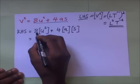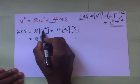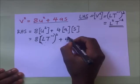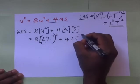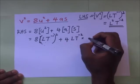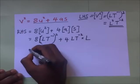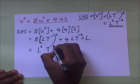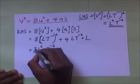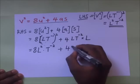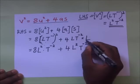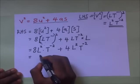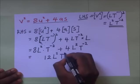U is velocity, so its dimensions are LT⁻¹; squared gives L²T⁻². The dimensions of acceleration are LT⁻², and s (distance) is L, so acceleration times distance gives LT⁻² × L = L²T⁻². Therefore the right-hand side is 8L²T⁻² plus 4L²T⁻², which gives 12L²T⁻².